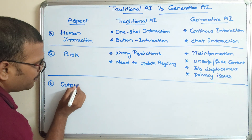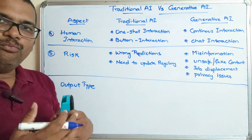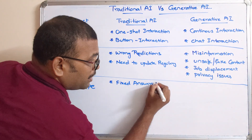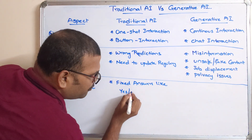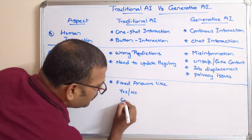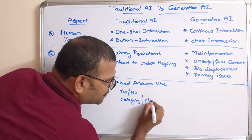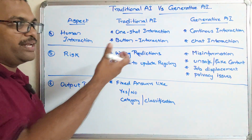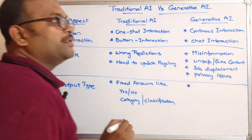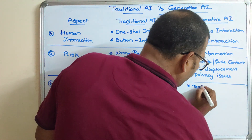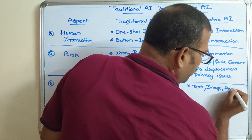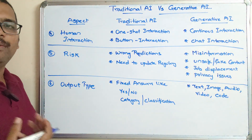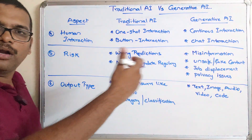The sixth aspect is output type. In traditional AI, the output is fixed answers — like yes or no, or a category, classification, or recognition result. In generative AI, new content can be created in the form of text, image, audio, video, or software code.